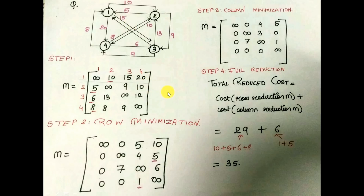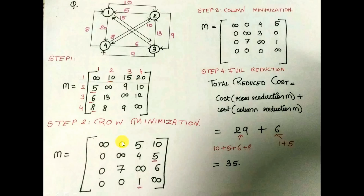After creating the matrix, the next step is to find the row minimized matrix. For each row, we identify the minimum element and subtract it from all elements in that row. In row 1, the minimum element is 10, so: infinity minus 10 is infinity, 10 minus 10 is 0, 15 minus 10 is 5, 20 minus 10 is 10. In row 2, the minimum element is 5, so: 5 minus 5 is 0, infinity minus 5 is infinity, 9 minus 5 is 4, 10 minus 5 is 5. We fill the whole matrix similarly.